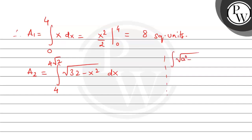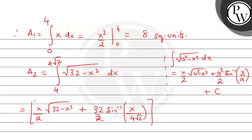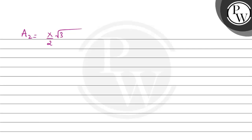Before evaluating, let's recall that the integral of square root of (a squared minus x squared) dx equals (x/2) times square root of (a squared minus x squared) plus (a squared/2) times sin inverse of (x/a) plus constant C. Applying this here, A2 equals (x/2) times square root of (32 minus x squared) plus (32/2) times sin inverse of (x divided by 4 root 2), evaluated over the limits 4 to 4 root 2.